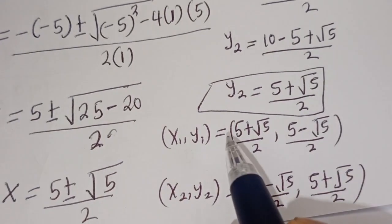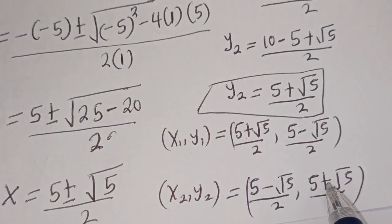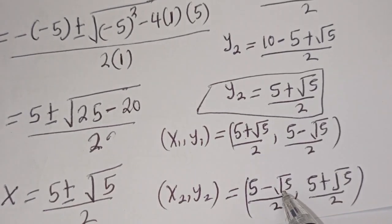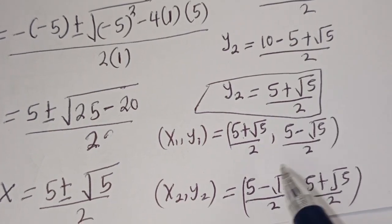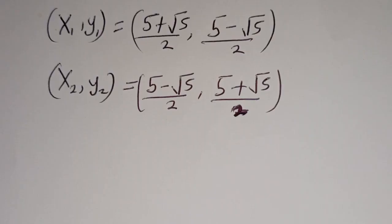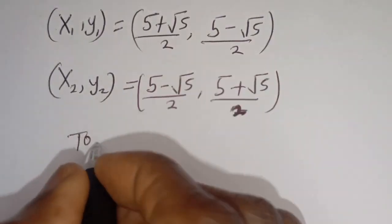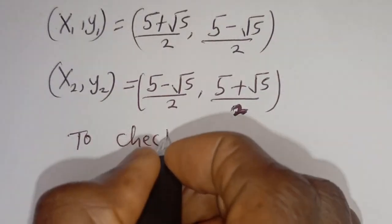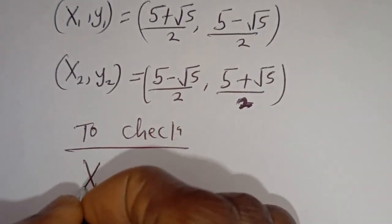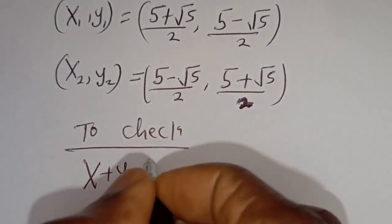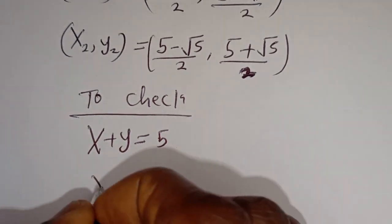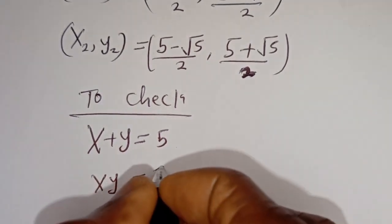You can see that x1 here is equal to y2, and y1 here is equal to x2. We can check to confirm if this answer is right. To check, we have the given equations x plus y equals 5 and xy equals 5.